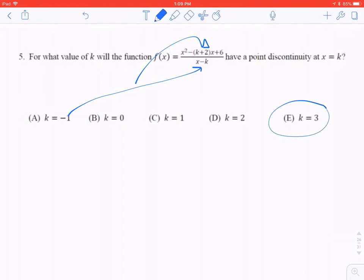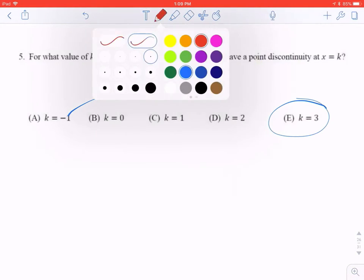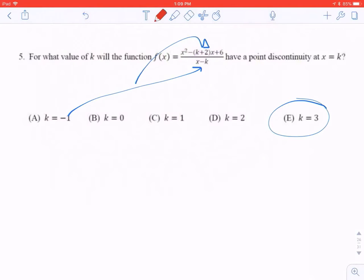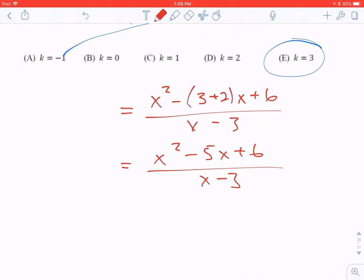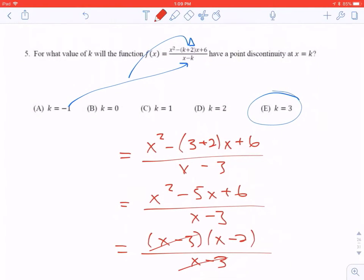So I will cut to the chase and tell you this one does, and let me just show you how it gives you the correct answer. If k is 3, it's going to be x squared minus 3x plus 2x plus 6 over x minus 3. It's going to give us x squared minus 5x plus 6 over x minus 3. Now the numerator should factor so that it has a factor of an x minus 3, and it does. Since the x minus 3 is canceled, there's a hole there. So the answer is E.